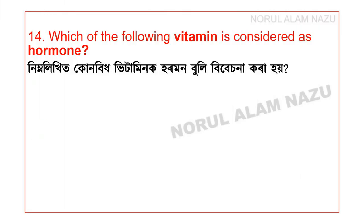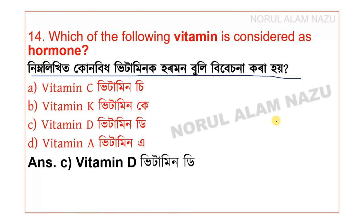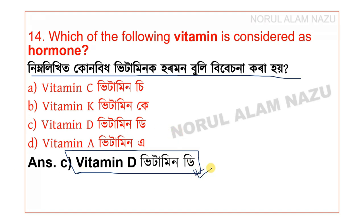Which of the following vitamins is considered a hormone? Options: Vitamin C, Vitamin K, Vitamin D, and Vitamin A. Vitamin D is considered a hormone.